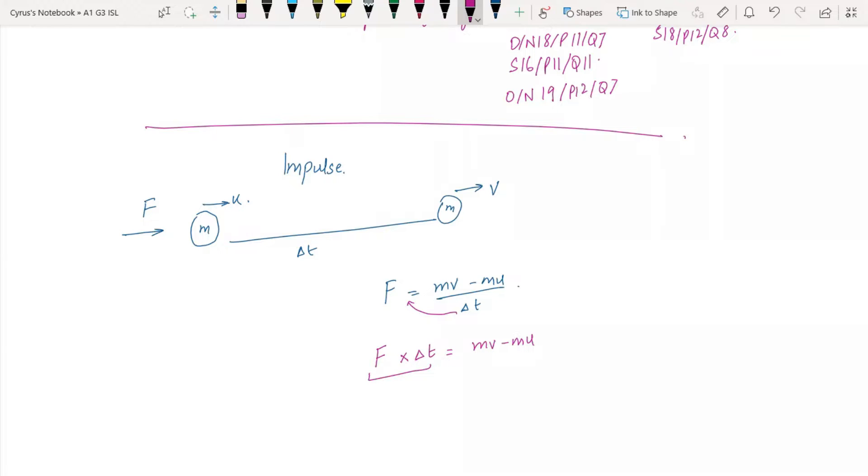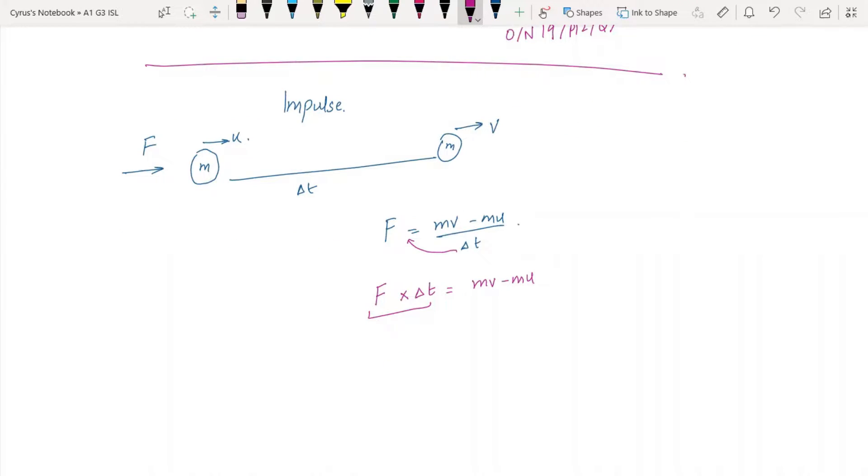So, the impulse is what? This F into delta T is what we call the impulse. This MV minus MU is known as the change in momentum. An impulse is force multiplied by the time for which the force acts.